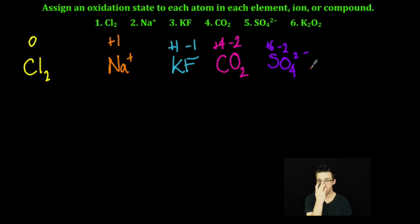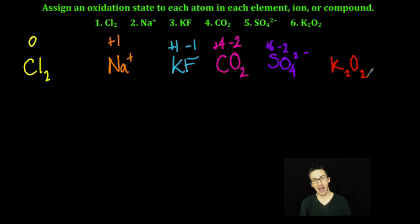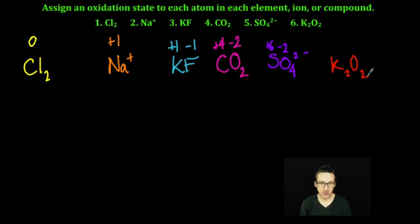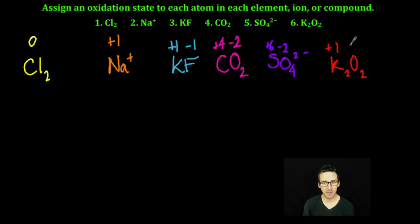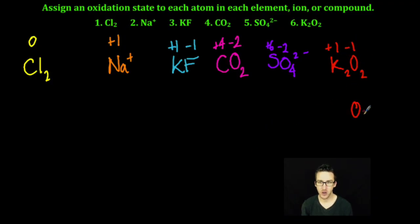And then lastly, and most difficultly, number six: K₂O₂. This is an ionic compound — a metal and a nonmetal. However, this is an example where oxygen is not going to have that negative two oxidation state. It's about following those rules in order of priority. The very first thing I need to do is assign the potassium ion an oxidation state of plus one. And if potassium is plus one, that means each oxygen must have an oxidation state of minus one. This is the peroxide ion, or O₂²⁻, which is a common exception to oxygen having a minus two oxidation state.